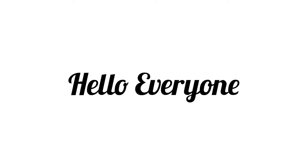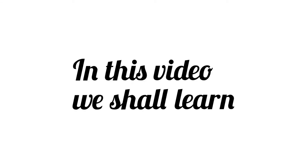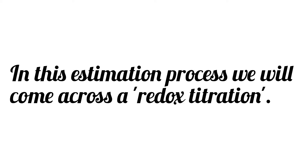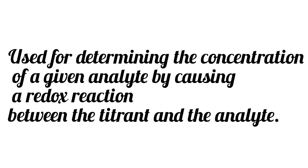Hello everyone, welcome back to another video. In this video we shall learn the estimation of iron(II) using standard potassium permanganate solution. In this estimation process we will come across a redox titration, which is basically used for determining the concentration of a given analyte by causing a redox reaction between the titrant and the analyte.